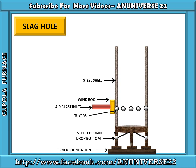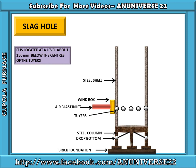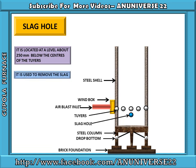Next is slag hole. It is located at a level about 250 mm below the center of the tuyeres. This is the location of the slag hole. The main purpose of the slag hole is to remove the slag from the cupola furnace.